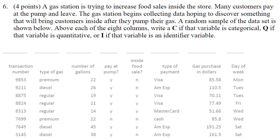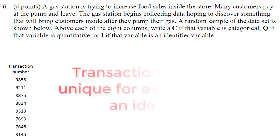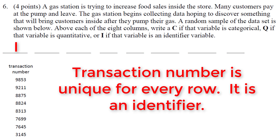The first thing we see is transaction number, and this is a number but don't be tricked — it's actually an identifier. This would identify each row because you could call up the gas station, say you had transaction 9211, and this would be a unique number that would not and cannot repeat. So this is the identifier in the data set — someone could call up and easily identify their transaction. These are groups of one: no one should have the same transaction ID.